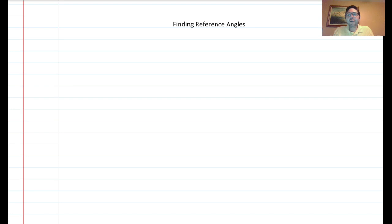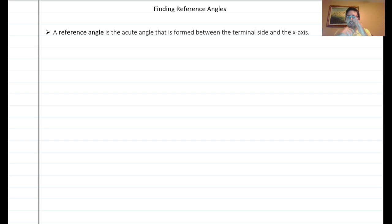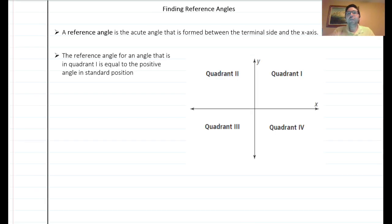Now let's talk about reference angles. A reference angle is the acute angle formed between the terminal side and the nearest x-axis. You need to know your quadrants: quadrant one is top right, two is top left, three is bottom left, and four is bottom right. The quadrant determines how you calculate the reference angle.